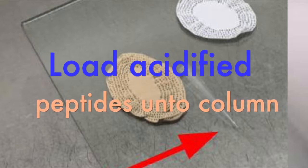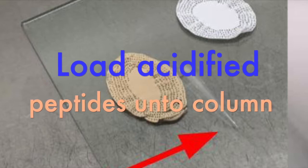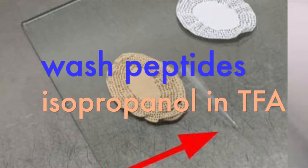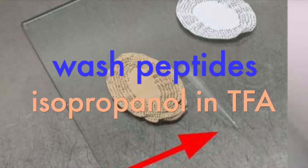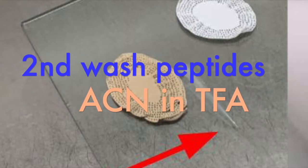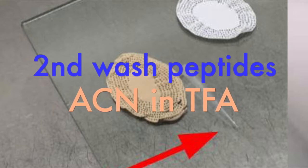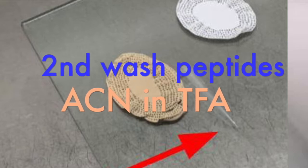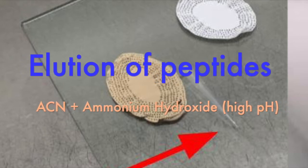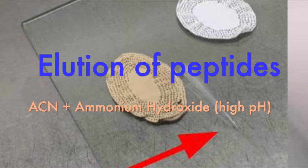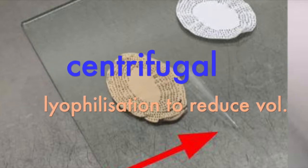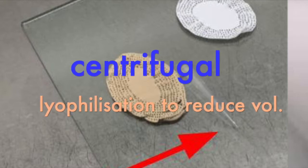First thing you do is wash the sample that's now loaded onto the C18 column. The wash is 50 microliters of 100% isopropanol with 1% TFA. A second wash is performed with 50 microliters of 5% ACN spiked with 0.2% TFA. You are now ready for elution. Elute the peptides with an elution buffer which consists of 60% ACN and 0.5% ammonium hydroxide. The eluted peptides are in 50 microliters, which is quite a large volume, so you want to dry it down and concentrate it. Do this by putting it into a centrifugal lyophilization instrument such as a speed vac.